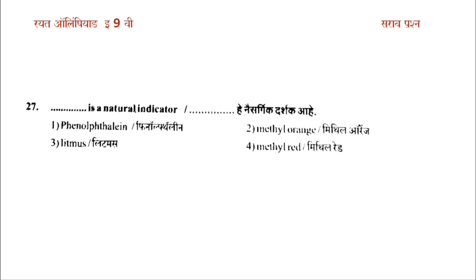What is a natural indicator? The options are: option 1 is phenolphthalein, option 2 is methyl orange, option 3 is litmus, option 4 is methyl red. The answer is option 3: litmus.